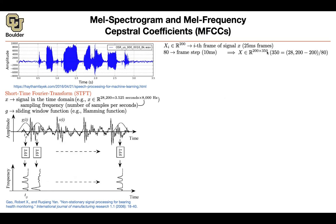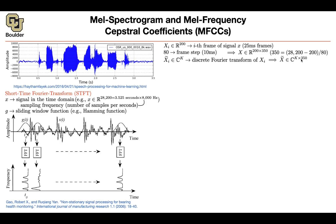Where are we getting 350 from? This is coming from your step size — you can think of it as your stride, striding by 80. You subtract the last window size of 200 from the total signal size, then divide by 80 because you are taking step sizes of 80. Now you're going to do the discrete Fourier transform of each one of these windows. The Fourier transform takes you from real numbers to complex numbers, and let's say you are keeping K Fourier coefficients — you get a complex-valued matrix of size K by 350.